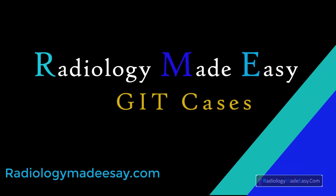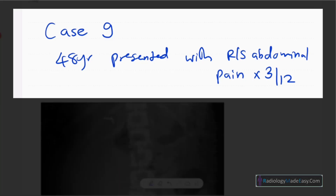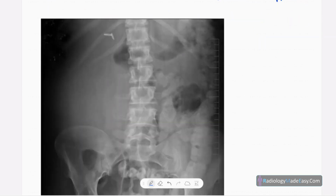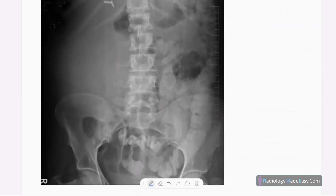Hello everyone, welcome back to Radiology Made Easy, your all-time favorite YouTube channel. This is case number nine in abdominal radiology. Our case is a 48-year-old patient presented with right-side abdominal pain of chronic duration.